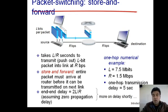A numerical example is given: L = 7.5 megabits and R = 1.5 Mbps. The one-hop transmission delay is 5 seconds. Since there are two hops, the total time is multiplied by two.